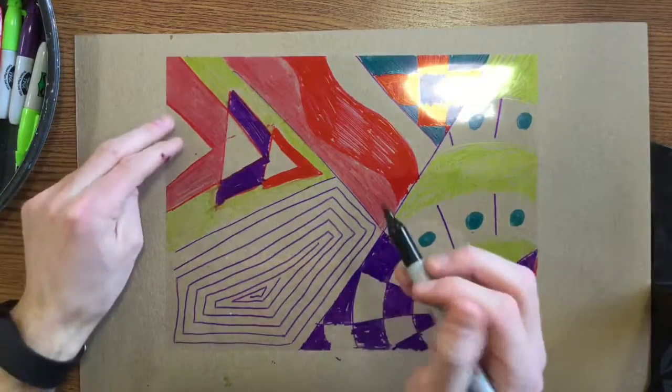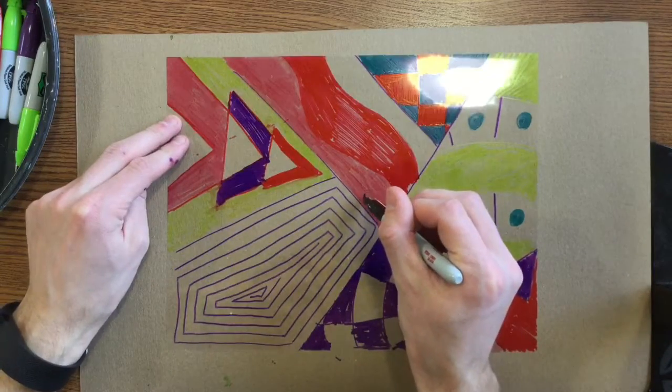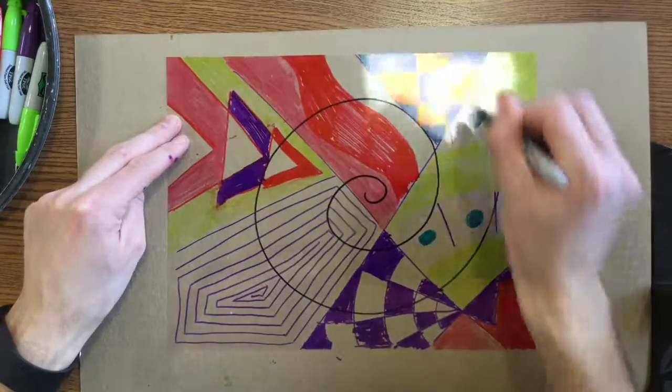After you get it all colored in you're going to come up to me and I'm going to take a sharpie and I'm going to draw a spiral on your sheet of paper.